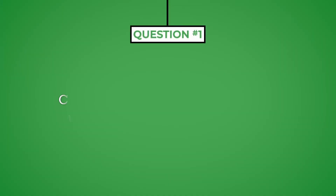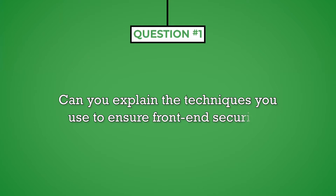Question number one: can you explain the techniques you use to ensure front-end security? The purpose of front-end security on a website is twofold. The first is to keep the client and their data secure. The second is to prevent the client from accessing parts of the website that they shouldn't reach. Companies will be interested in how you go about performing this task, since it protects both their users and the company from data loss, hacking, and liability issues.